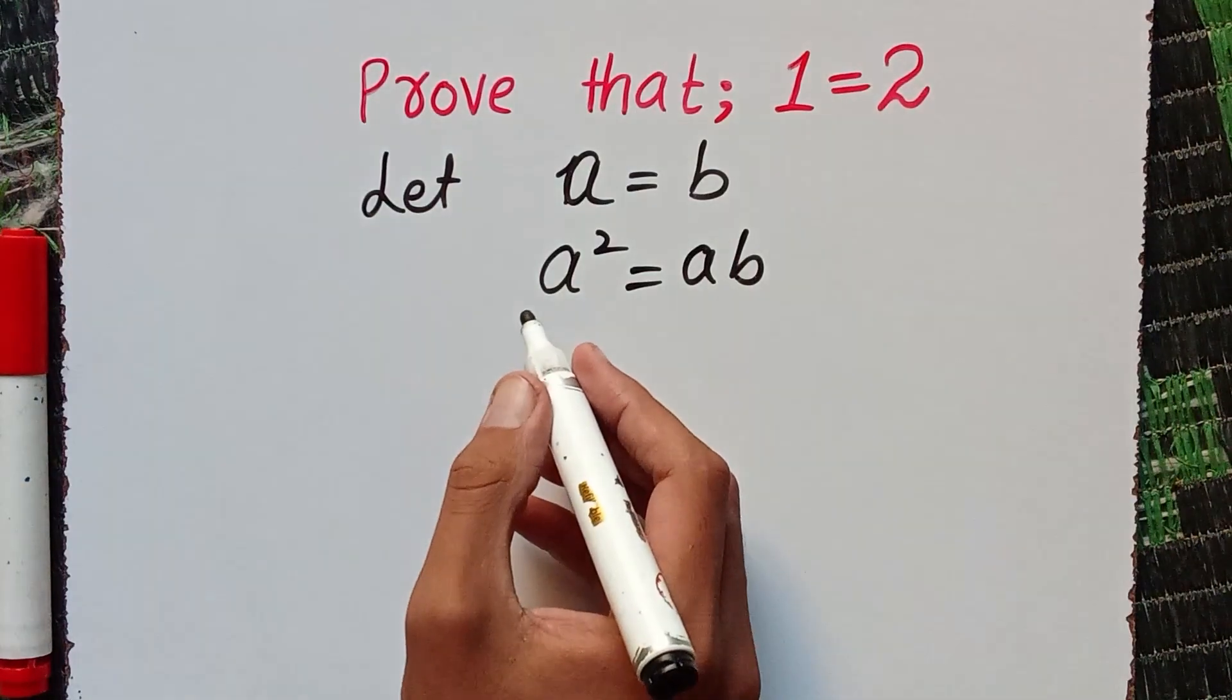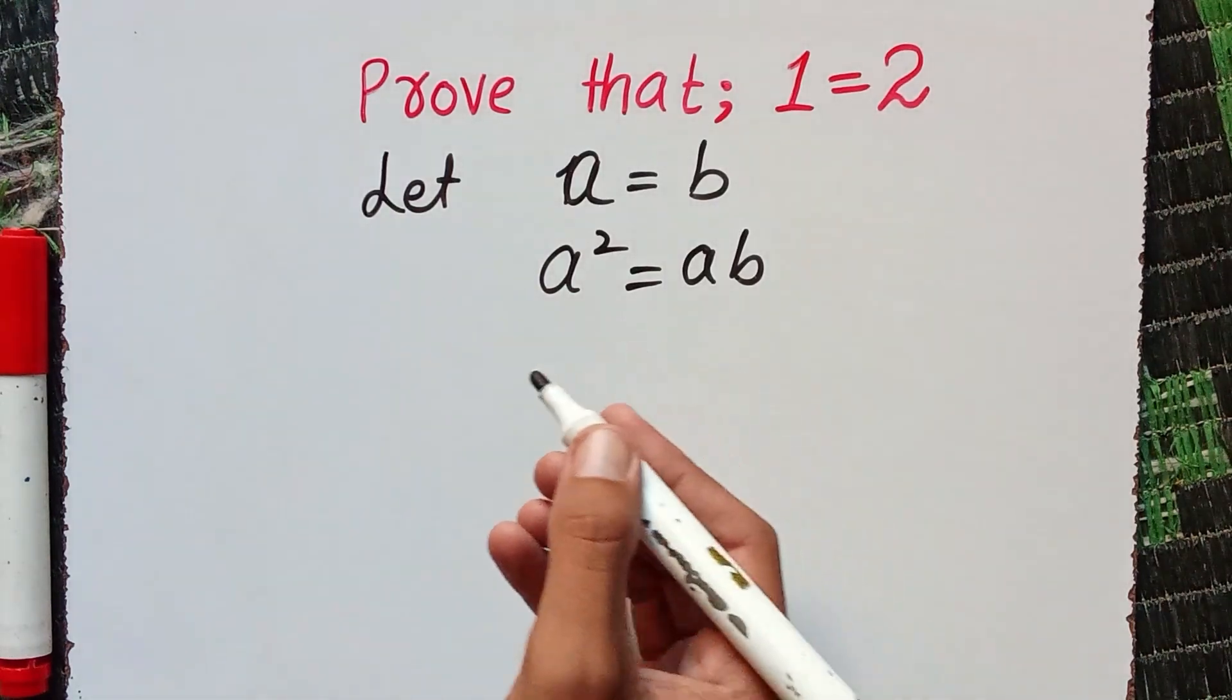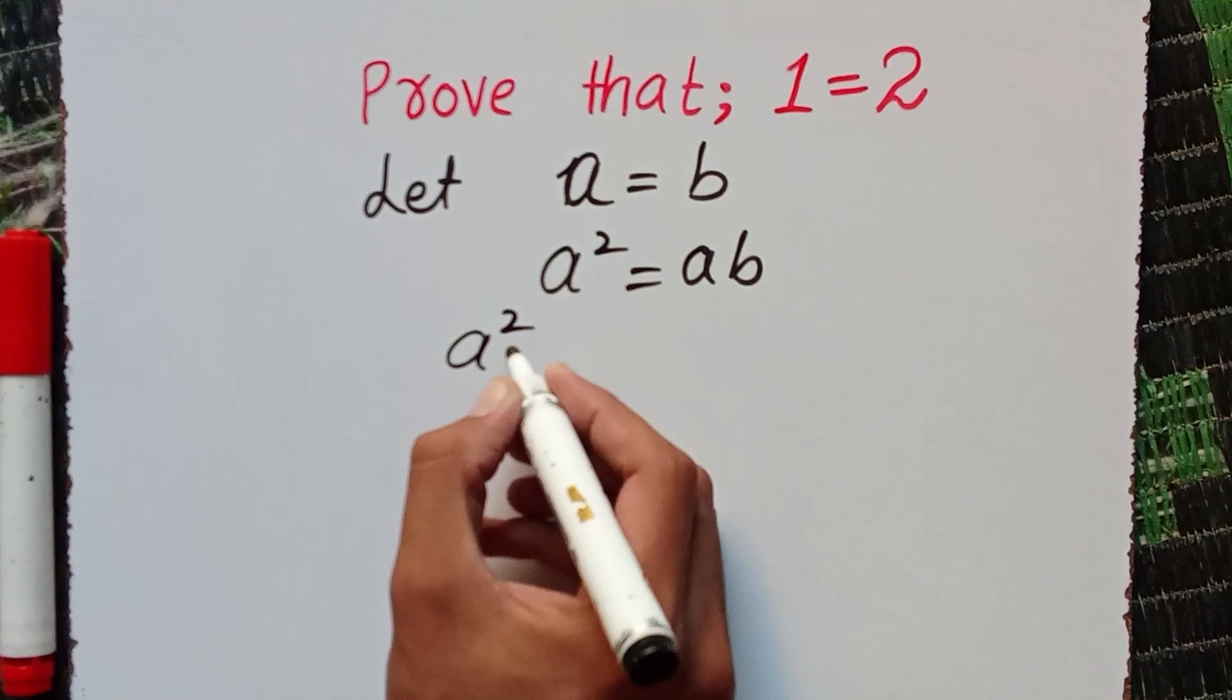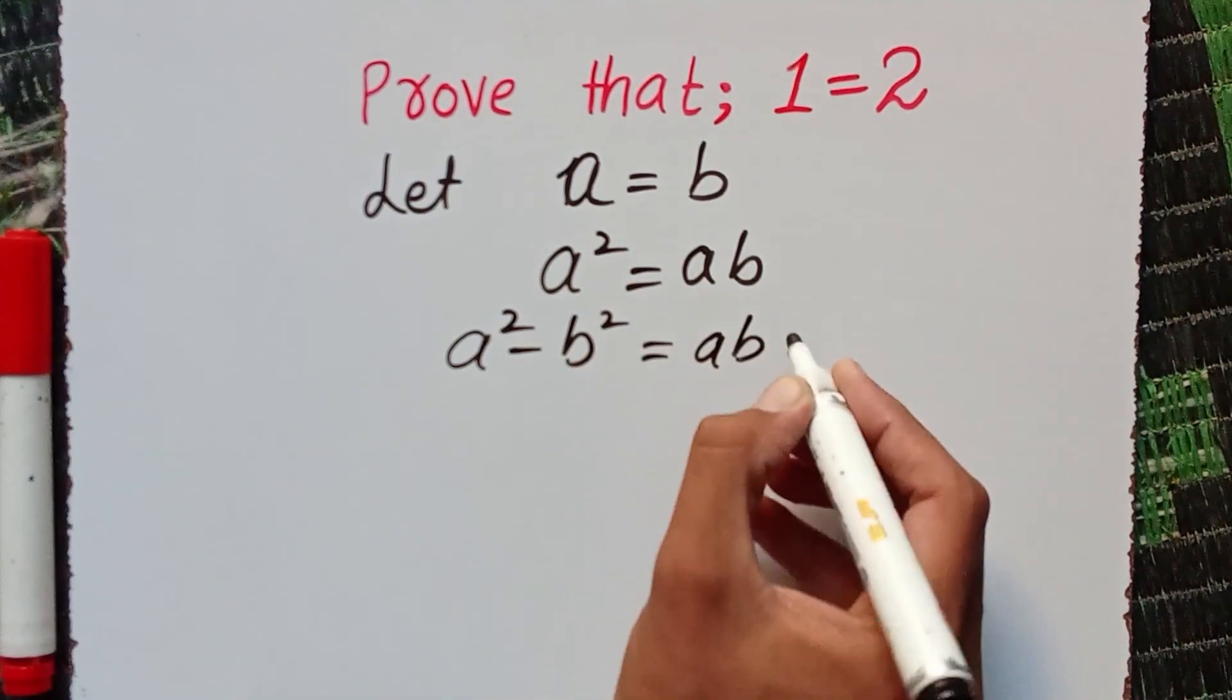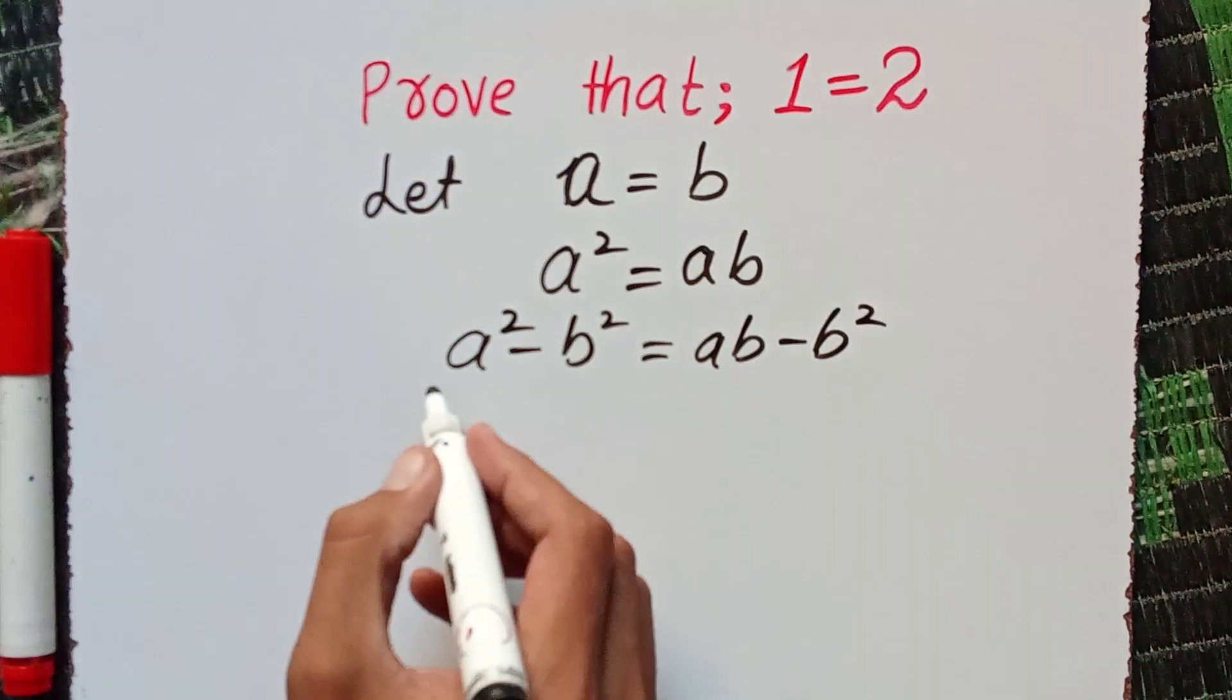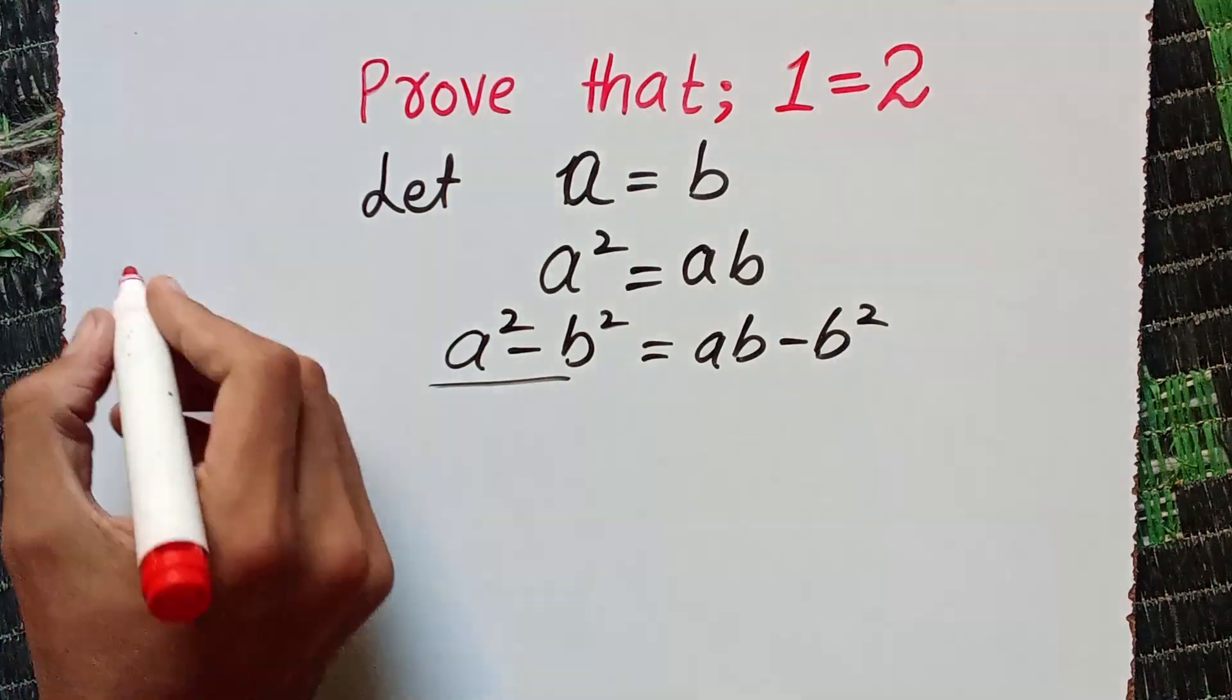Now I can subtract b squared from both sides, so it becomes a squared minus b squared equals a b minus b squared. We know that a squared minus b squared equals (a plus b)(a minus b).